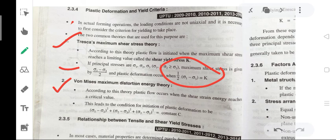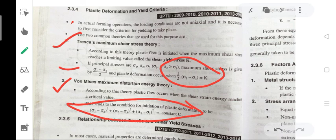The equations are: (1/2)(sigma_1 - sigma_3) = k for Tresca, and Von Mises' condition is (sigma_1 - sigma_2)² + (sigma_2 - sigma_3)² + (sigma_3 - sigma_1)² = C.